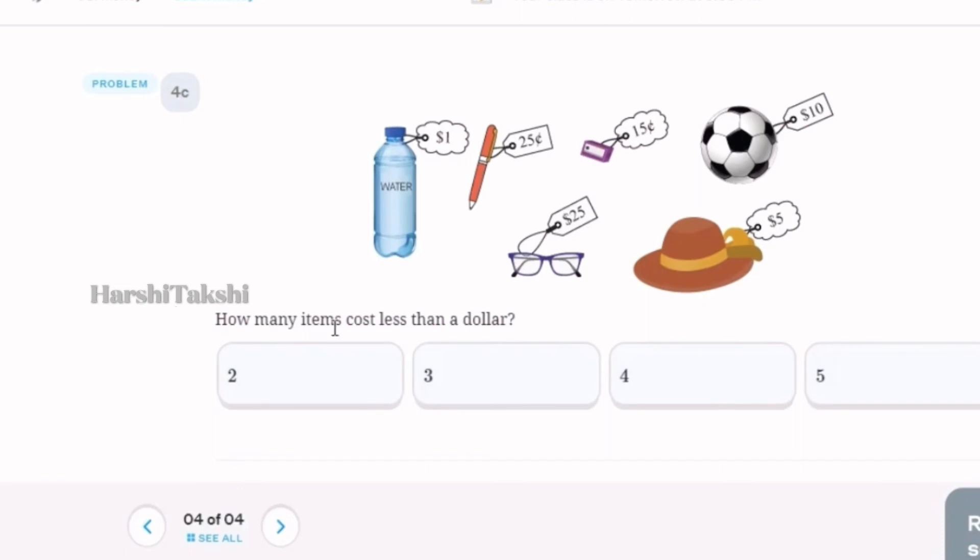How many items cost less than a dollar? Two.